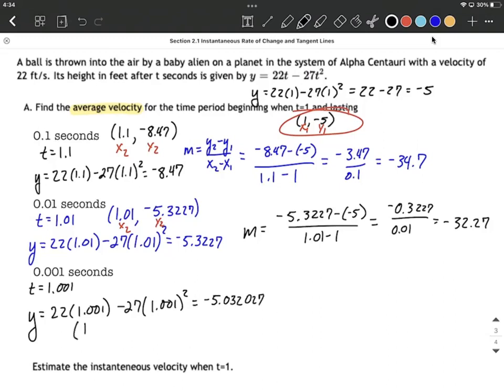Again, treat it like an ordered pair. You don't have to write this as an ordered pair to fill into the average velocity or average rate of change formula. Just don't want to lose you along the way. This time this is our x2, y2. And the velocity is going to be, the average rate of change I should say, is negative 5.032027 minus negative 5, over 1.001 minus 1, which eventually works out to be negative 32.027.